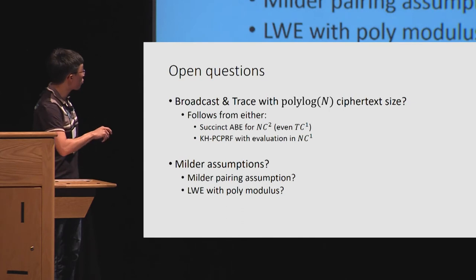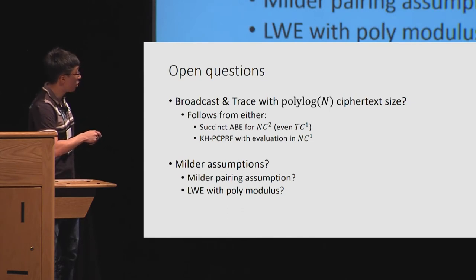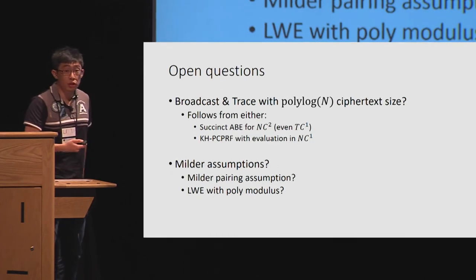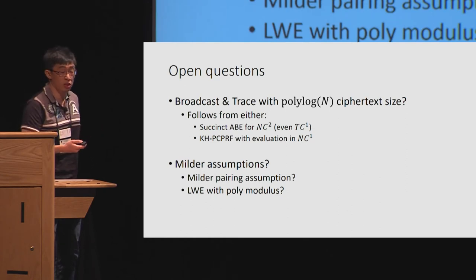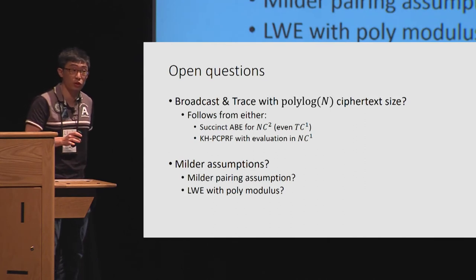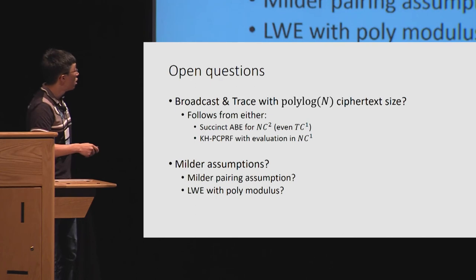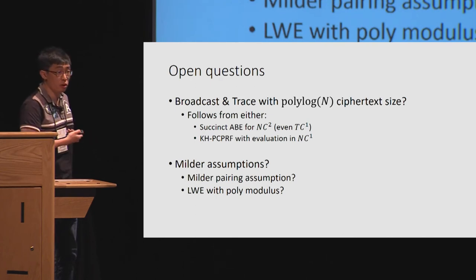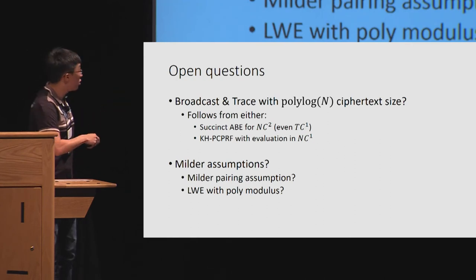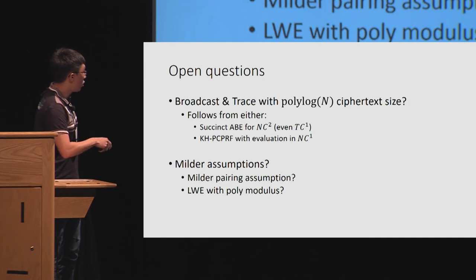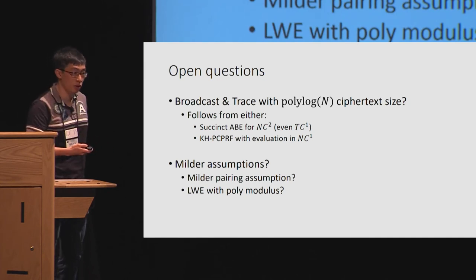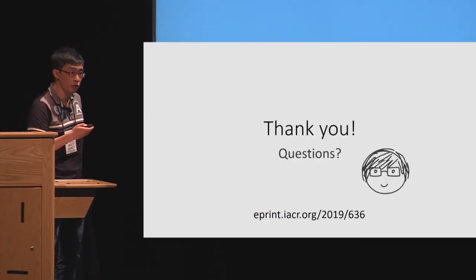As open questions, we showed how to build broadcast and trace with n to the epsilon ciphertext size. It's natural to ask whether this could be brought down to polylog, which would more closely match what we have under IO. This could follow from two orthogonal kinds of progress: either stronger succinct ABEs, or PRFs with more efficient evaluation. Alternatively, we could ask for slightly milder standard assumptions in our constructions. That's it for me — if you have any questions, I'd be happy to take them.